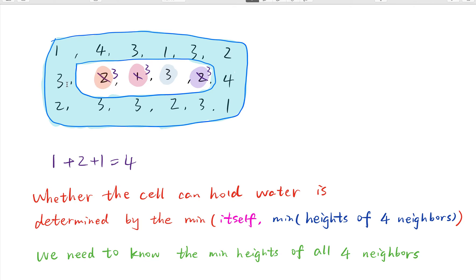So for every cell pulled from the heap, we decide whether its 4 neighbors can hold water, because the pulled cell's height represents the minimum boundary height. We update the height of this neighbor to 3 because we can hold 1 water. Then we check the next cell of height 3, and we find an unvisited neighbor — it can hold 3 minus 1, which is 2 water. So we update this height to 3 and accumulate 2 to the final result, and so on.